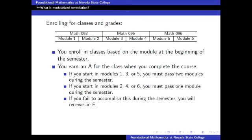If you start in modules one, three or five, you must pass two modules during the semester to earn an A. If you start in modules two, four or six, you only need to pass one module during the semester to earn an A. And if you fail to accomplish either, you will receive an F for the class.